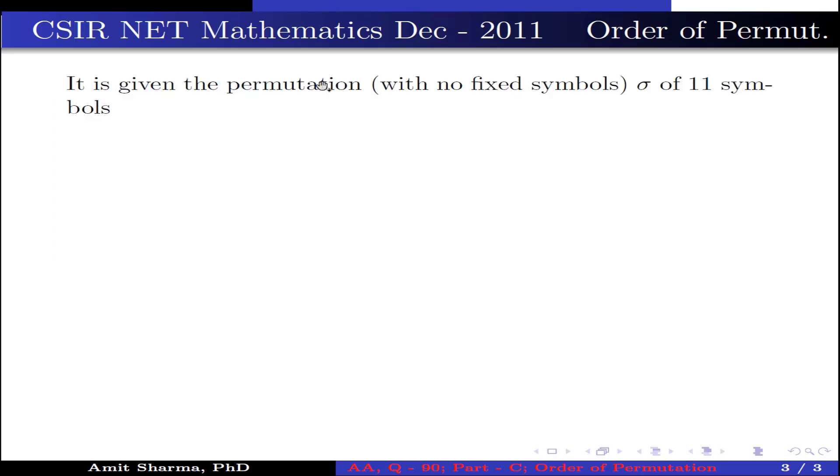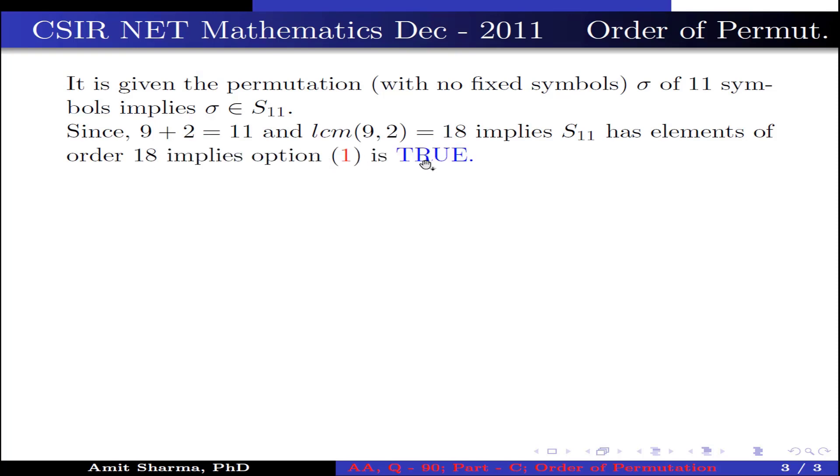Now it is given that the permutation with no fixed symbols sigma of 11 symbols implies sigma belongs to S11. Since 9 plus 2 is 11 and LCM of 9, 2 is 18, this implies S11 has elements of order 18. This implies option one is true.